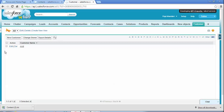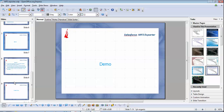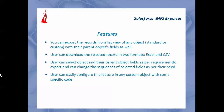The same functionality applies for that custom object layout. You can select some fields and click on Export Detail, and proceed with the same functionality. This is very easy to add that particular feature for both standard and custom objects. These are some features of this app: first, you can export records from the list view of any object with their parent object fields as well; second, users can download selected records in two formats — XLS or CSV; third, users can select fields dynamically and change their sequence as per their own need; and fourth, you can easily configure this feature for any custom object with some specific code.